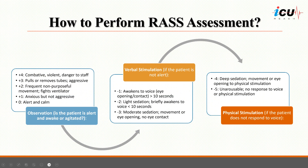To attain an accurate RASS score, you should initially observe the patient and assign a score of 0 if the patient is calm, alert, and awake. If the patient is agitated, assign a score between plus 1 to plus 4 based on the agitation level: plus 1 for anxiety without aggression, plus 2 for frequent movement or fighting the ventilator, plus 3 for pulling on tubes or showing aggression, and plus 4 for violent behavior.